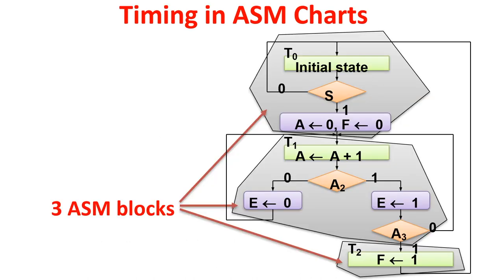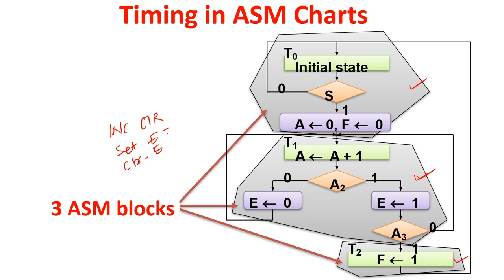This ASM has 3 blocks: block T0 executes in one cycle, block T1 in another cycle, block T2 in another cycle — 3 different cycles, whole block executes in one cycle. We need to generate control signals: clearing E, setting E, incrementing counter — increment counter and set E and clear E will be generated in the same time. Based on the earlier value of A2, either set E or clear E will be active.